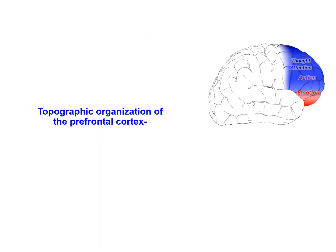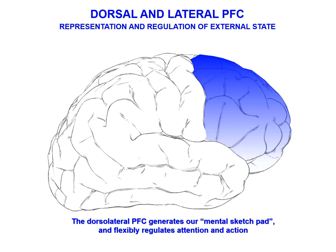To help us understand the neurobiology of mental illness, let's look at the topographic organization of the prefrontal cortex. The dorsal and lateral aspects represent and regulate our external world. The dorsolateral prefrontal cortex generates our mental sketch pad and can flexibly regulate attention and actions so that they are appropriate to the task at hand. Its functions include working memory, abstract reasoning, top-down regulation of attention and action, planning and organization, and insight and judgment.